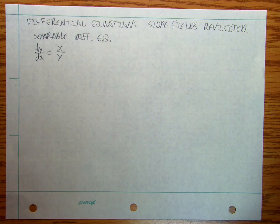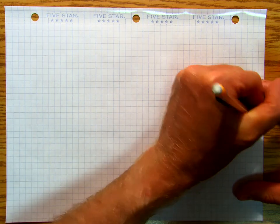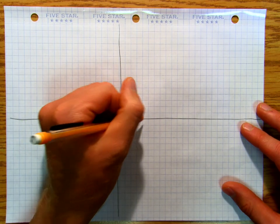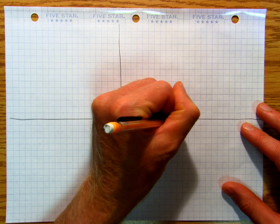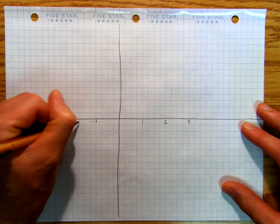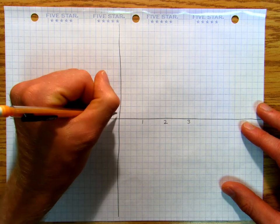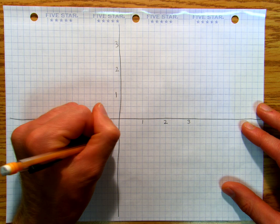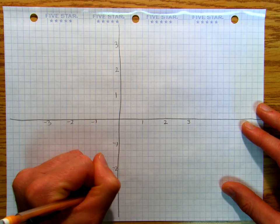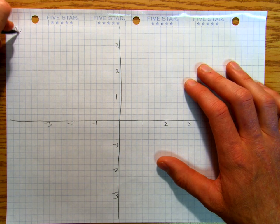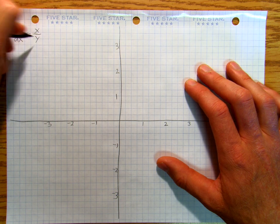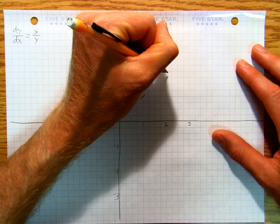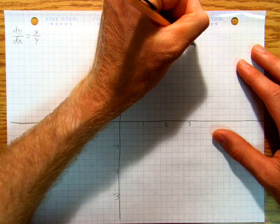So what you can do with this is start making some axes, going from negative three to three on both axes. And I can say that dy/dx equals x over y. So if I've got one and one, it's got a slope of one — I put a slope of one right there. I put a slope of one where two and two, and slope of one where three and three.